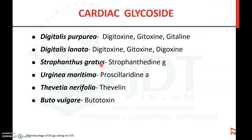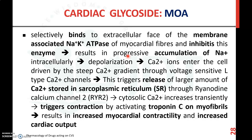Cardiac glycosides are obtained from different plants. Examples include digoxin, digitoxin, gitaloxin, and gitalin from Digitalis purpurea; digitoxin, gitaloxin, and deslanosid from Digitalis lanata; strophanthin and strophanthidin from Strophanthus gratus; sorilaridin A from Urginea maritima; and thevetin and thevenin from Thevetia nerifolia, as well as bufalin and bufadienolides.